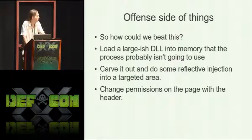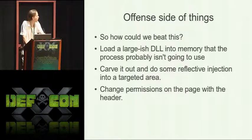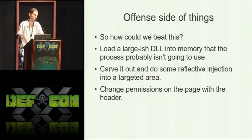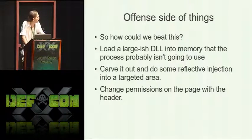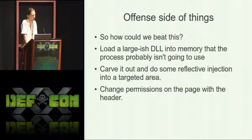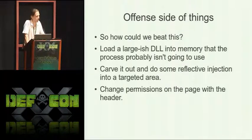From the offensive side, how can we beat detection if they started catching it? We could rewrite the PE header — it would be really simple, you could just zero out the MZ signature. You could load a large DLL into memory and instead of doing VirtualAlloc and copying the DLL into allocated space, load some random huge binary and carve it out and just be inside that — that would be relatively difficult to catch with signatures. You could change permissions on the page with the header, set it to no access. As long as you don't have to touch it anymore, you're done. Some tools might change permissions, check, then change it back when they're done looking — but at least one would fail in that way.